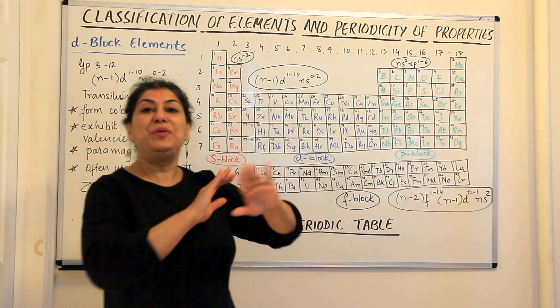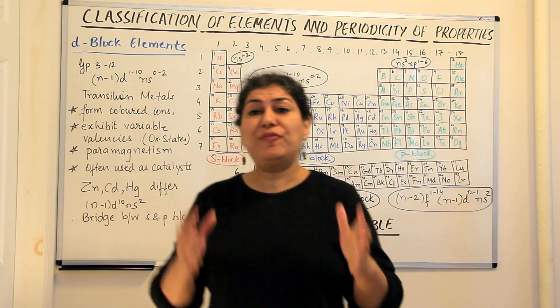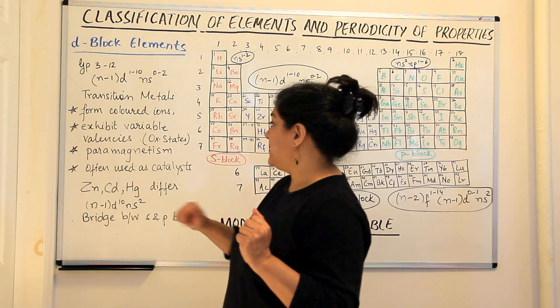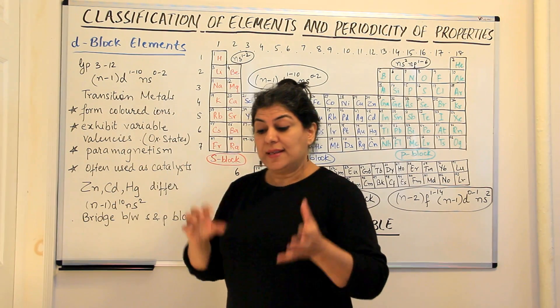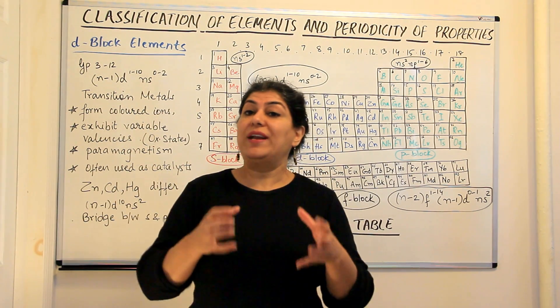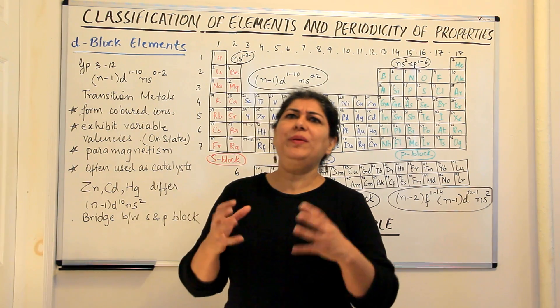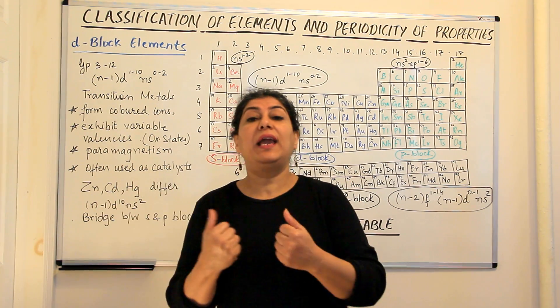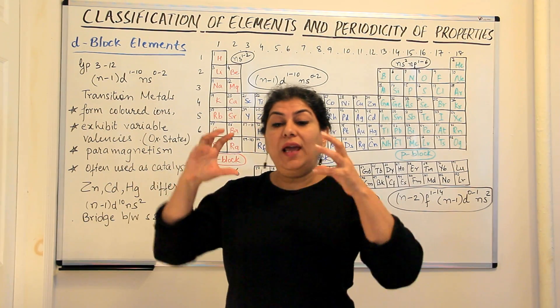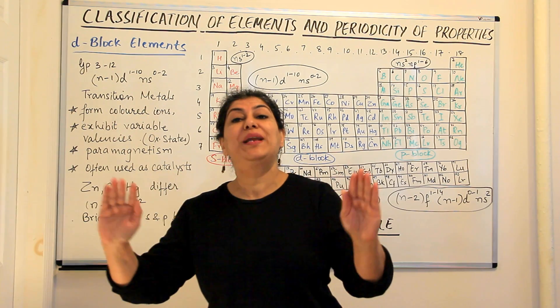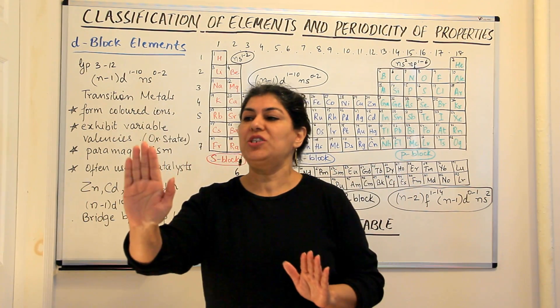A lot of beautiful colours you see are because of the transition metals. They form coloured ions and they exhibit variable valencies, the same element. Valency is the combining capacity of an element. How many electrons does it lose, gain or share in order to acquire stability?